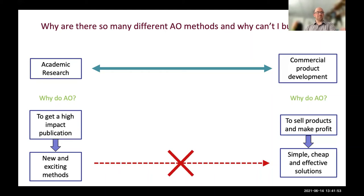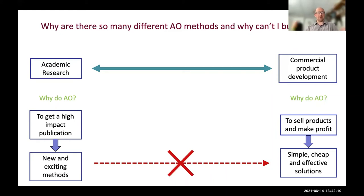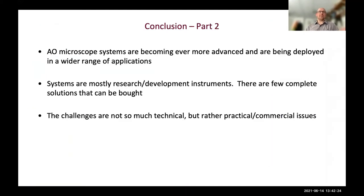To get adaptive optics into microscopes, we need things which work - not necessarily the most advanced recent developments - and a different path of technical development allowing people to go out and buy these things. In conclusion to this part: we're getting ever more advanced systems deployed across a wider range of applications, but they're mostly confined to research and development instruments. The challenges are not so much technical but practical and commercial. I fully believe that had a microscope company wanted to implement this ten years ago, they could have done so - the issue is not technical, but whether it makes sense from a business point of view.